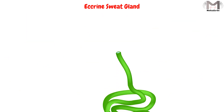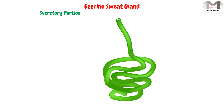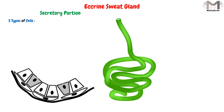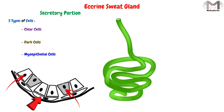The secretory portion is composed of 3 types of cells: the clear cells, the dark cells, and surrounding myoepithelial cells.